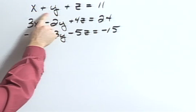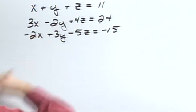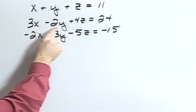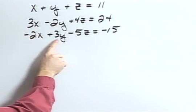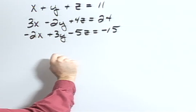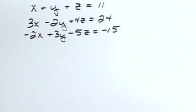Solve the system of equations: x plus y plus z equals 11, 3x minus 2y plus 4z equals 24, and negative 2x plus 3y minus 5z equals negative 15.